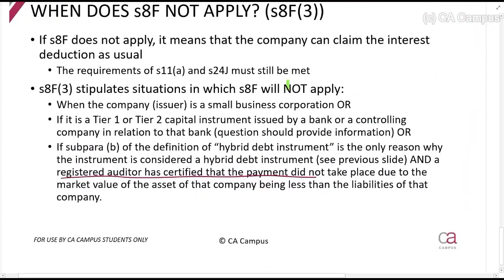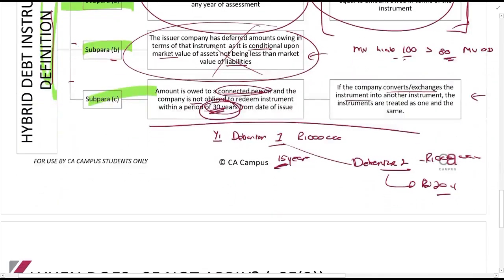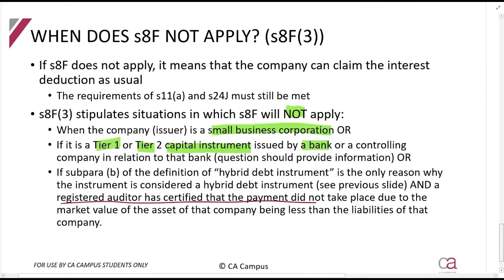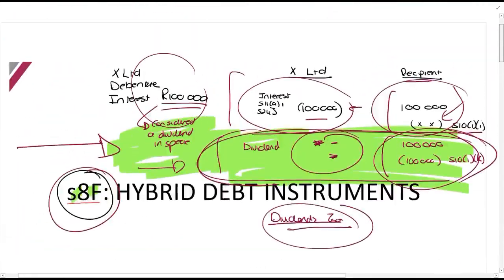The exceptions to Section 8F — when it will not apply — are: first, if the company X Limited is a small business corporation; second, if it is a tier 1 or tier 2 capital instrument issued by a bank (in an exam they will specify this); and third, where the market value of the assets does not exceed the market value of the liabilities and a registered auditor has certified that. Those are the exceptions, and that's it for Section 8F.